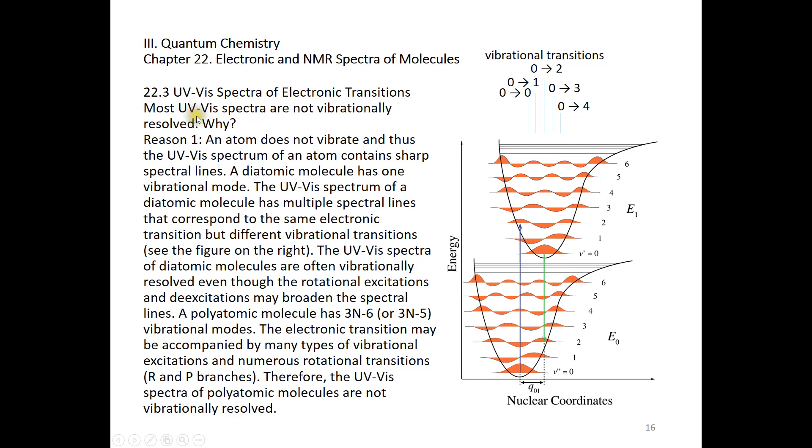Most UV-Vis spectra of molecules are not vibrationally resolved. Why? The first reason is this: An atom does not vibrate, and therefore the UV-Vis spectrum of an atom contains sharp spectral lines.